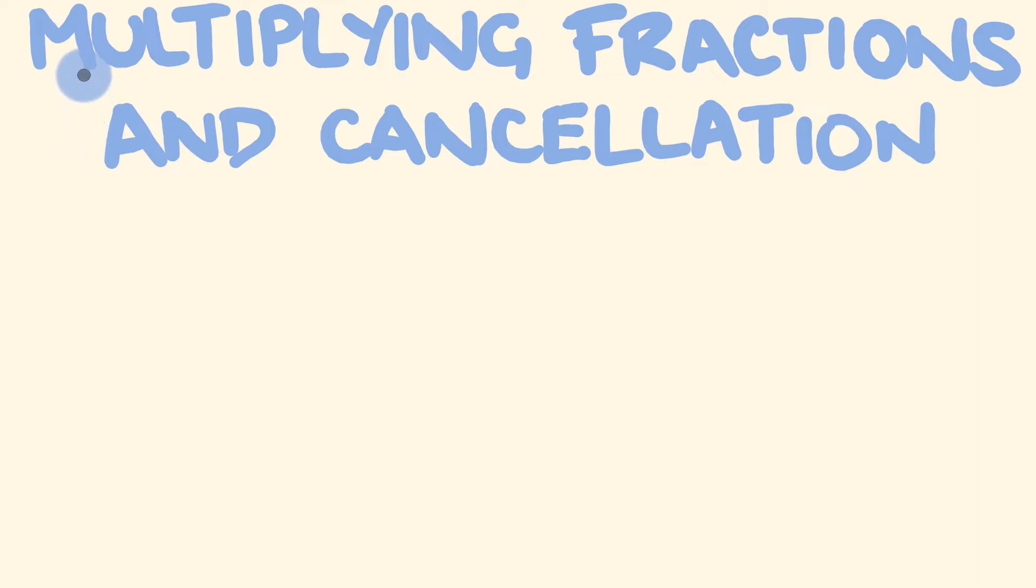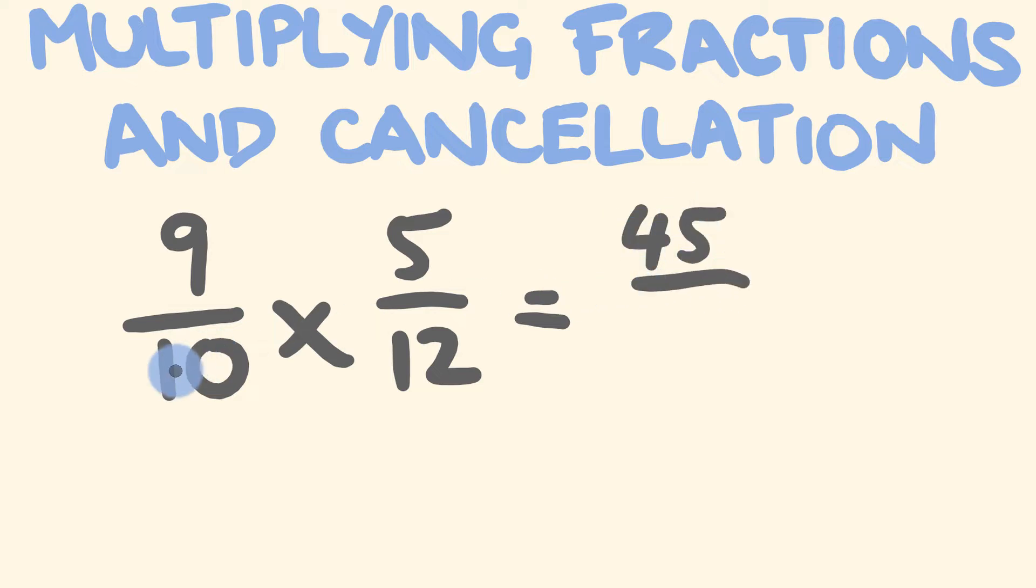So I'm just going to launch into this with an example. Say for instance we were multiplying 9 tenths by 5 over 12. Now without cancellation what we would usually do is we would just multiply straight across. We'd get the numerators here 9 times 5 is equal to 45 and 10 times 12 these are the denominators and we'd multiply those and get 120 and then we could simplify there by finding common factors that go into both.